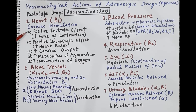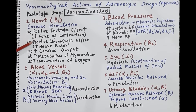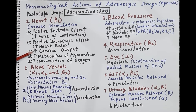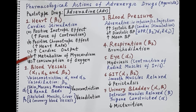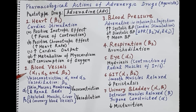Cardiac stimulation is mediated by a positive inotropic effect — adrenaline increases the force of contraction of cardiac muscles, causing an increase in cardiac output. Adrenaline also shows a positive chronotropic effect, that is an increase in heart rate. Because of both increased force of contraction and increased heart rate, there is increased metabolism of myocardial tissue and increased oxygen consumption by the myocardium.